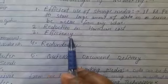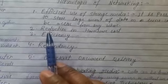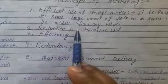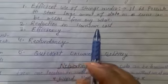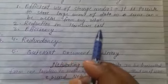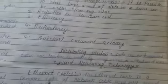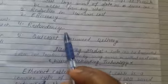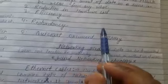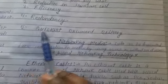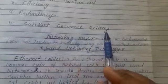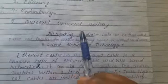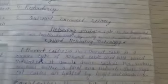The next advantage is efficiency, and also reduction in hardware cost — meaning hardware is available at a lower cost. Next is redundancy, which means duplicacy — there is less redundancy. And next is quick document delivery, meaning you can send a document quickly from one source to another destination without wasting time.